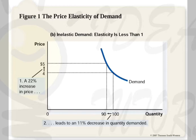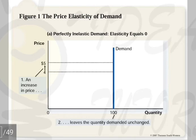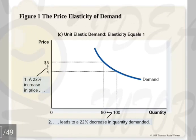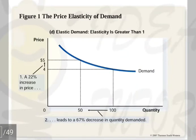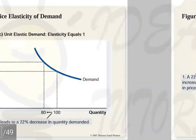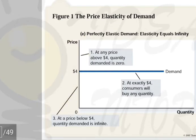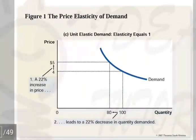With inelastic demand (elasticity less than one), the demand curve is comparatively steeper. As elasticity increases toward one, the curve becomes flatter. When elasticity equals one (unit elastic), the curve is flatter still. When elasticity is greater than one, the curve is even flatter. When elasticity is infinite (perfectly elastic), the curve is a horizontal flat line with zero slope. So slope and elasticity are inversely related, which helps in memorizing the curve shapes for each demand type.